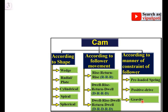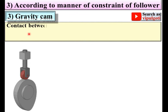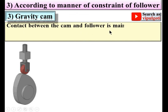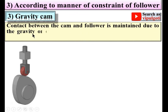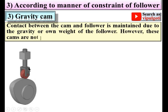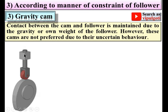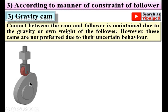The third type is the gravity cam. Contact between the cam and follower is maintained due to gravity, or the own weight of the follower — there is a continuous contact between them. However, these cams are not preferred due to their uncertain behavior.